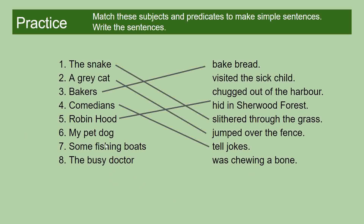My pet dog was chewing a bone. The main verb is 'chewing.' Technically, 'was' is also a verb — that's what we call a being verb — so I wouldn't worry about that too much just yet. The noun is 'bone.' The article 'a' always comes before the noun, and that's how you can tell.